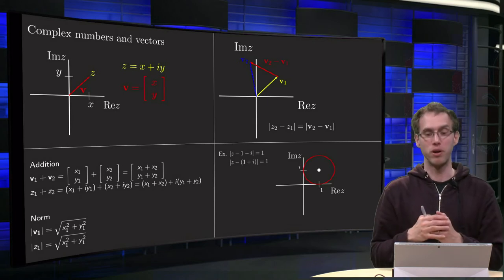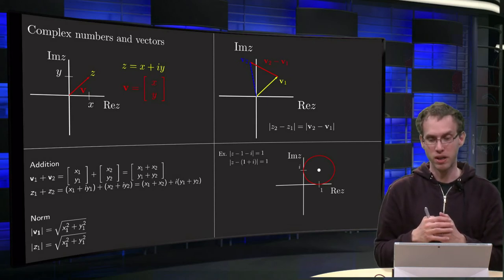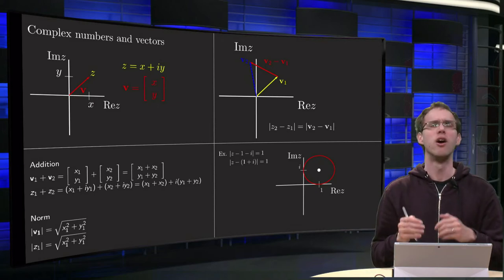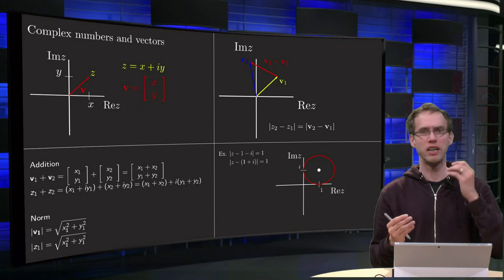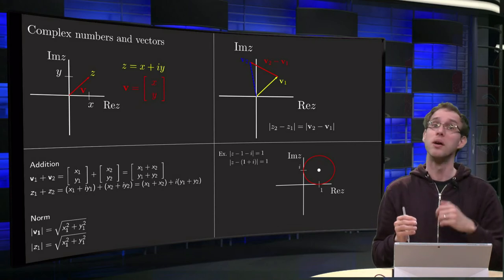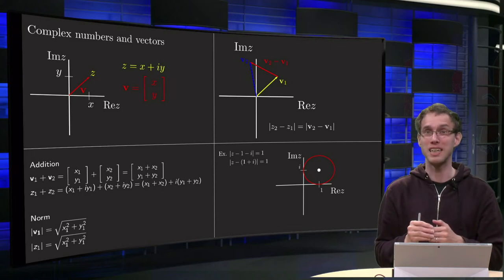Find all the points satisfying the equation z minus 1 times i, from that the norm equals 1. Of course you can use brute force, write z equals x plus iy and work everything out and you will find your answer. But you can also view this geometrically.